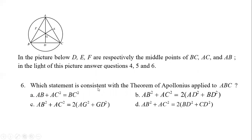Which statement is consistent with the theorem of Apollonius applied to triangle ABC? For Apollonius' theorem: AB² + AC² = 2(AD² + BD²), which is the statement of Apollonius' theorem.